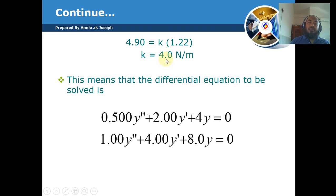This means the differential equation to be solved is 0.5y'' + 2y' + 4y = 0. Dividing by 0.5 gives 1.00y'' + 4.00y' + 8.0y = 0.